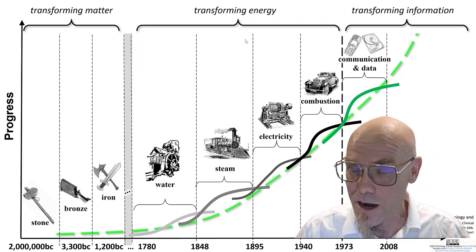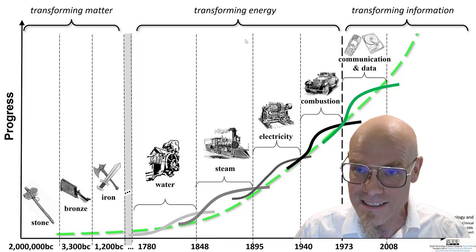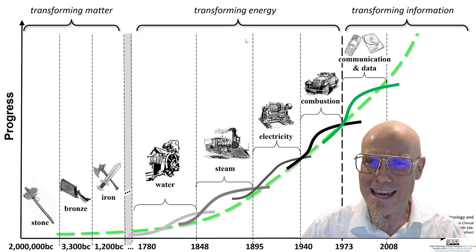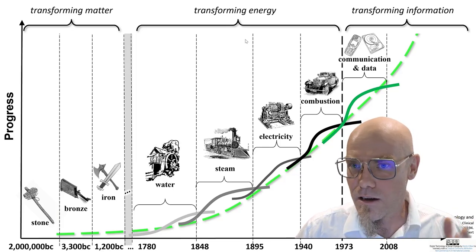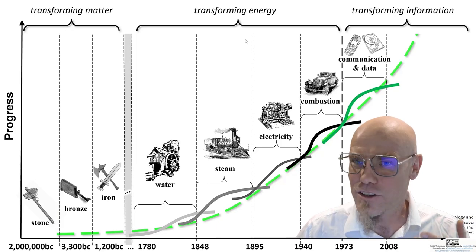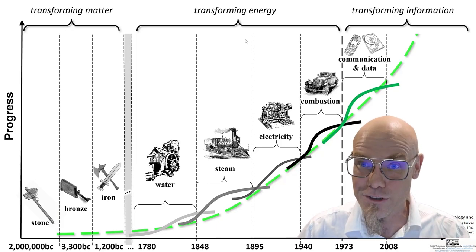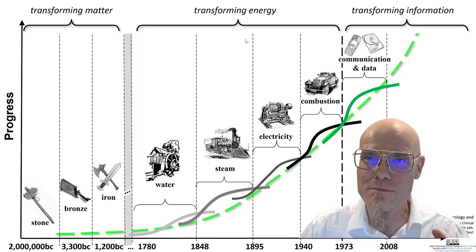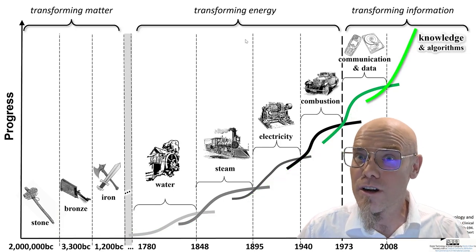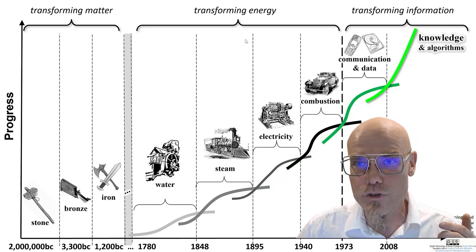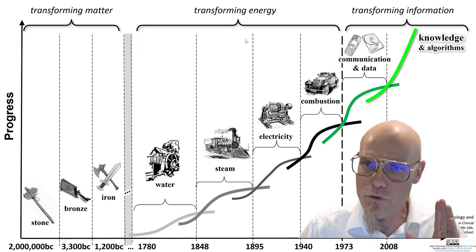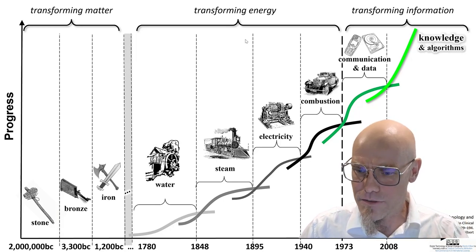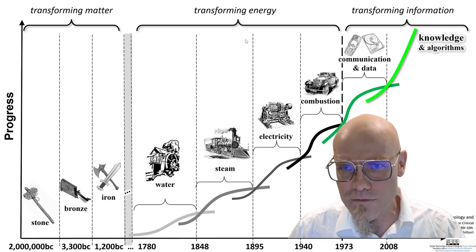Within the information paradigm, we are already in the second technological long wave. These are called Schumpeterian long waves. The first was learning how to process data in communication — that started with telephony, with telecommunication. And now the currently dominating paradigm has to do with knowledge and algorithms, with artificial intelligence, with programming. That doesn't mean that each one of them is completely rolled out.